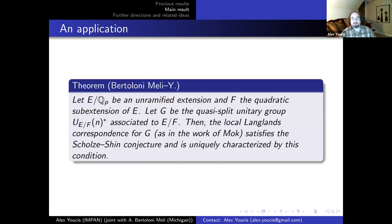As an application: for unramified unitary groups, since Bertoloni Meli and I proved the Scholze-Shin conjecture holds in that case using Mok's local Langlands correspondence, and the unitary group is a good group, we know not only that the Scholze-Shin conjecture holds, but that it uniquely characterizes the correspondence in that case.